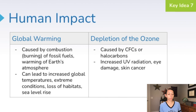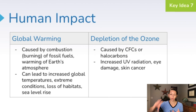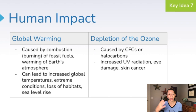Depletion of the ozone layer is not causing global warming. This event is caused by chlorofluorocarbons or halocarbons released into the atmosphere, which produce holes in the ozone that can lead to increased UV radiation, eye damage, and human skin cancer. But those holes in the ozone layer are not directly related to the increased warming of the earth's atmosphere — some students mix that up, and I just want to clear that up.